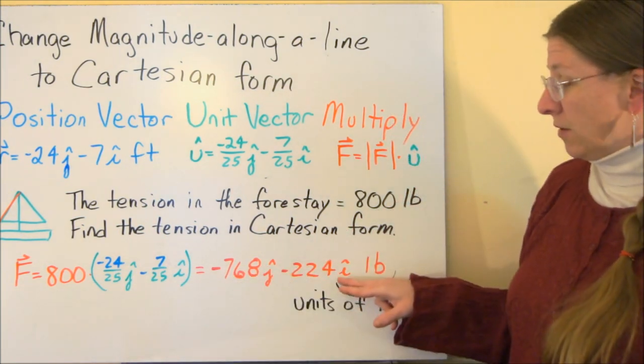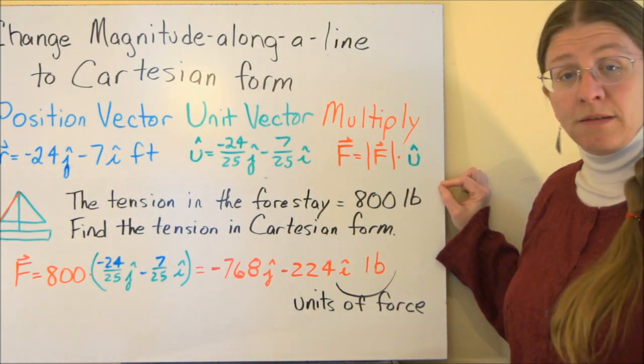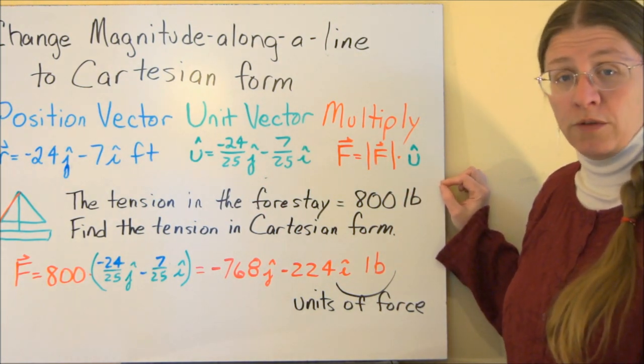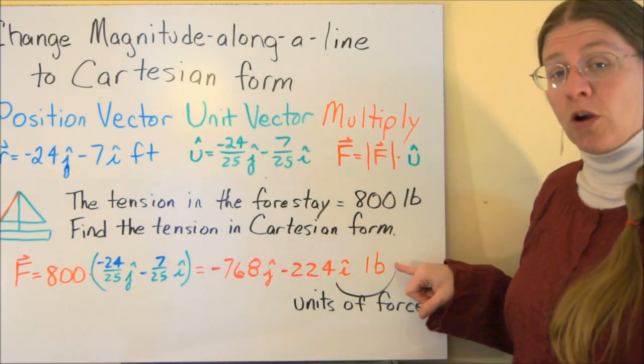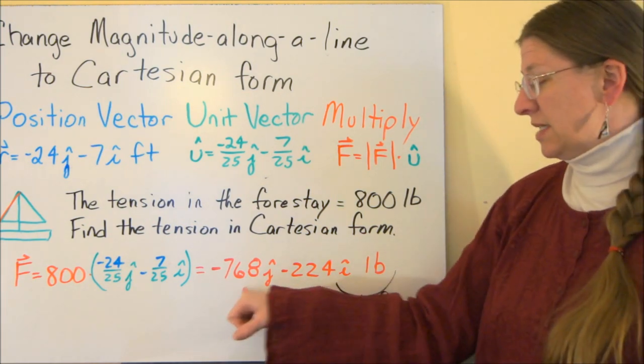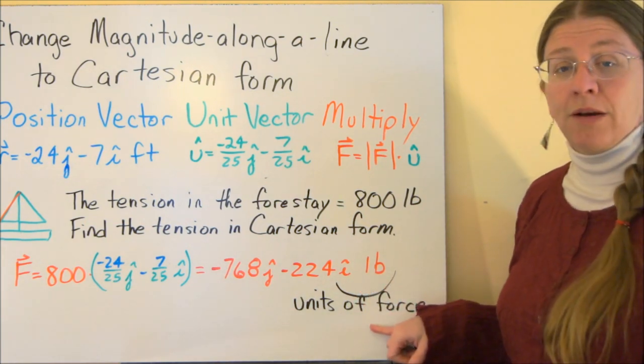If you multiply that, this vector is given to you in magnitude along a line, 800 pounds, along the forestay. This vector is the same vector. It's now in Cartesian form. Minus 768j, minus 224i in pounds. These now have units of force.